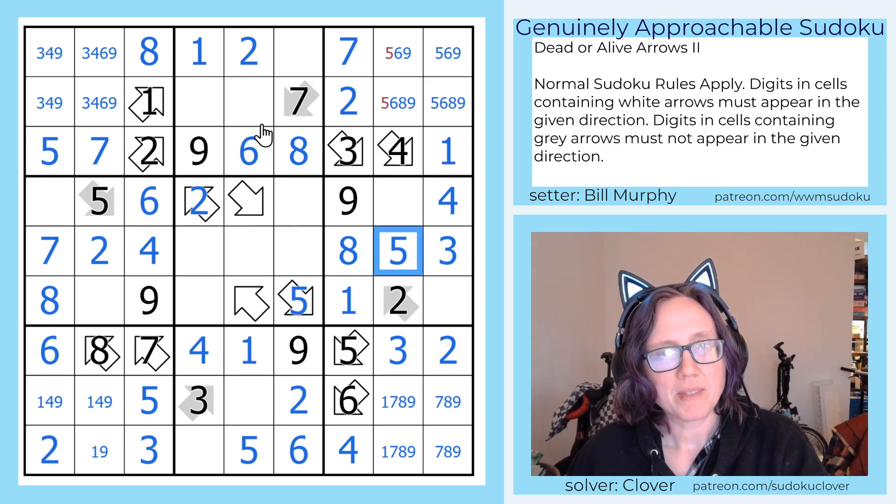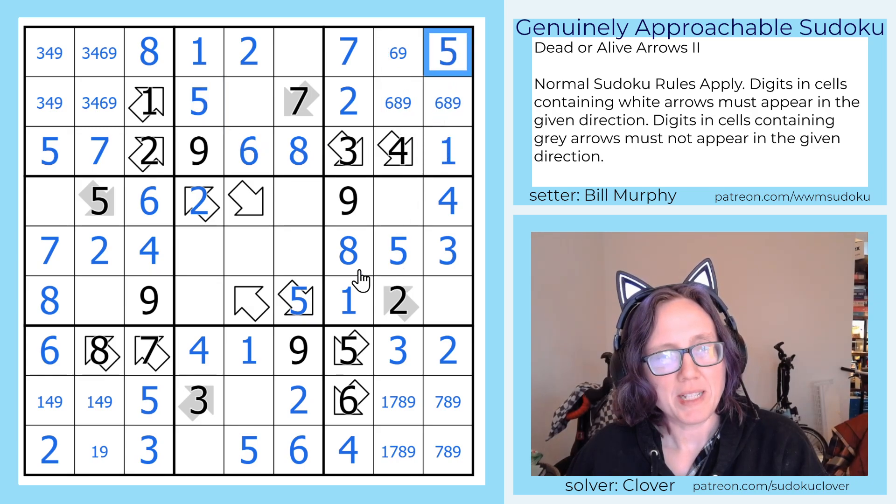That places a 5 here, and these two 5s also place a 5 right there. That eliminates 5 from these 3 cells and lets us place a 5 in this region.